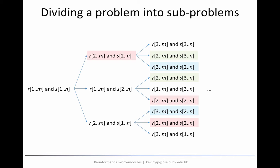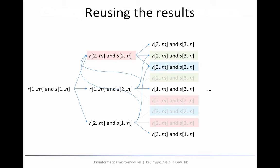Notice that each of these sub-problems involves the alignment of a suffix of r and a suffix of s. Note that the empty string, which is cutting out all characters from a string, is also considered a suffix. One interesting thing about this process is that each sub-problem actually appears multiple times in this recursion tree. For example, the sub-problem of aligning r2 to m with s2 to n appears three times, marked with a red background. So if we have already solved the problem in the first branch, when we encounter it again in the second and third branches, we do not need to solve it again — we can take the result directly, indicated by the blue arrows pointing to the red box.